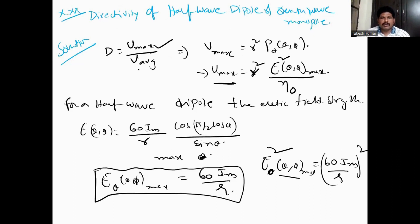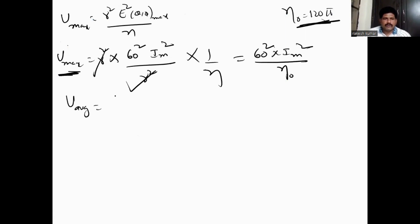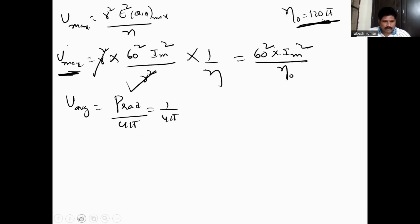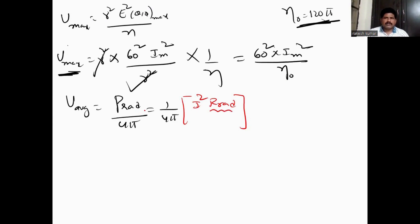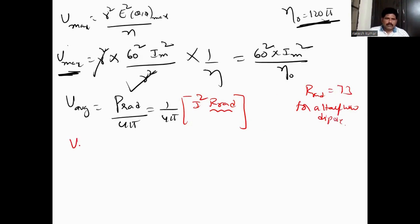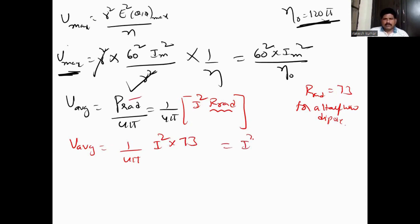Now for u_average: u_average equals p_radiated divided by 4π. The radiated power p equals Im² times the radiation resistance. For a half-wave dipole, the radiation resistance is 73 ohms. So u_average equals Im² times 73 divided by 4π.